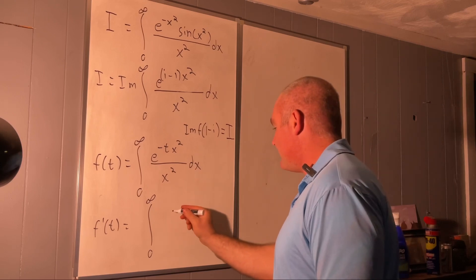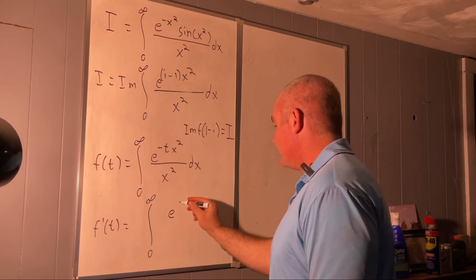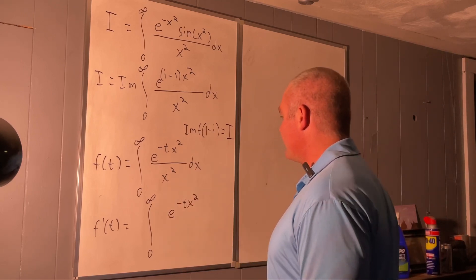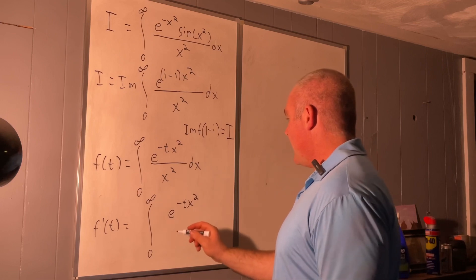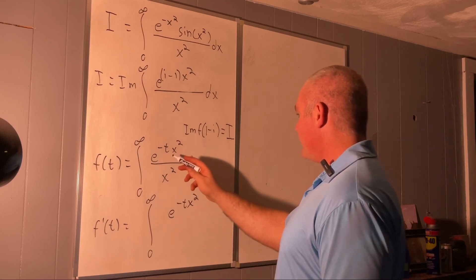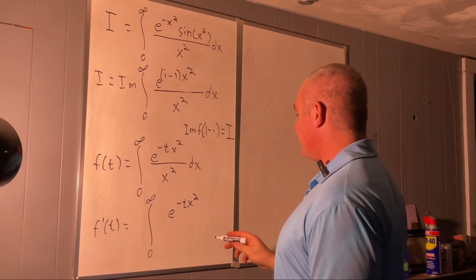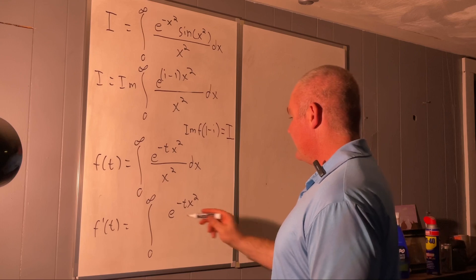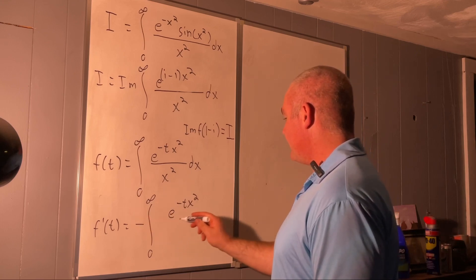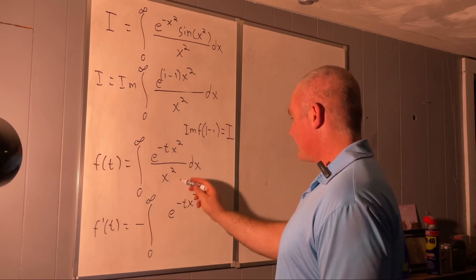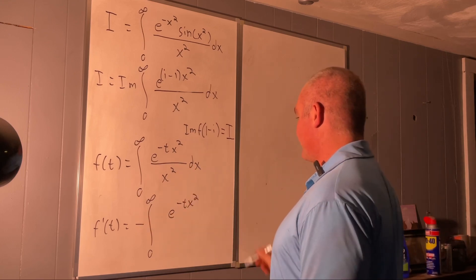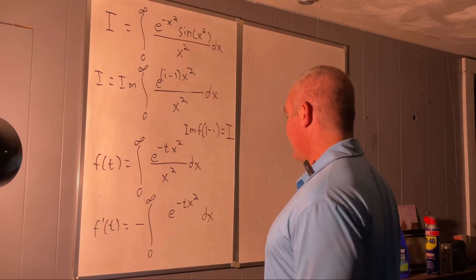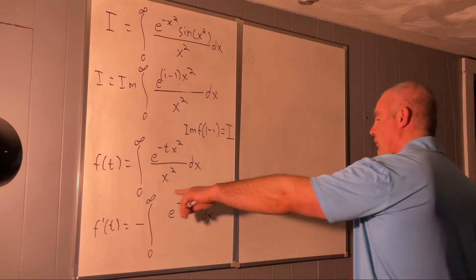But then we will recover a negative x squared, so the x squared will cancel with the x squared in the denominator dx. That gives us some form of the Gaussian integral.